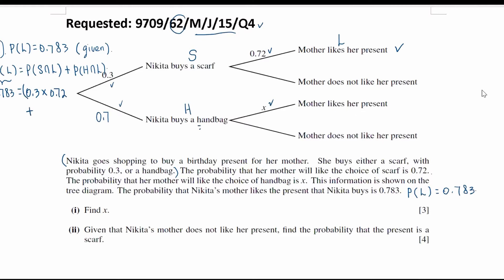Or, plus Nikita buys a handbag, 0.7, and her mother likes her present, given by the question as X. That is how we form an equation, and we are able to solve it to get the value of X. So, 0.783 equals 0.3 times 0.72 plus 0.7X.